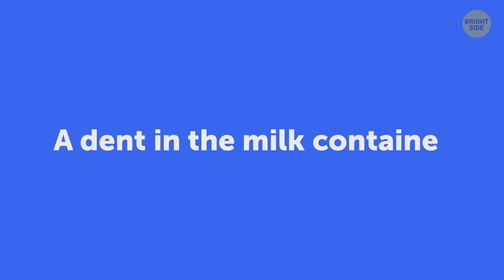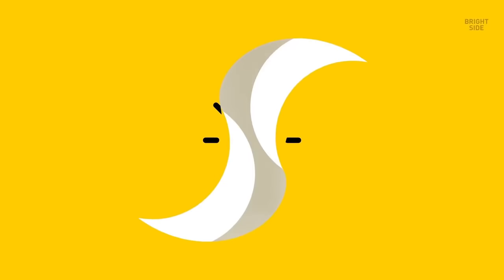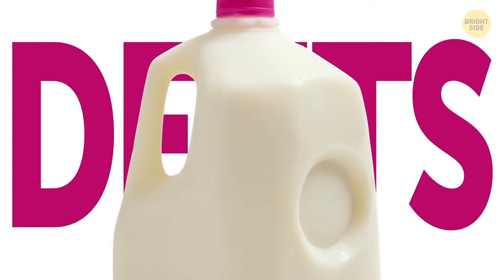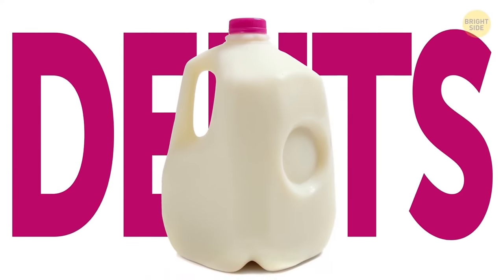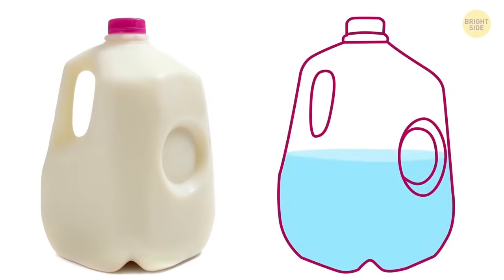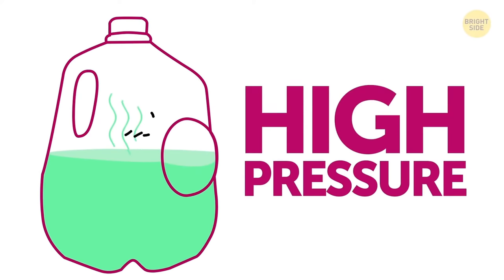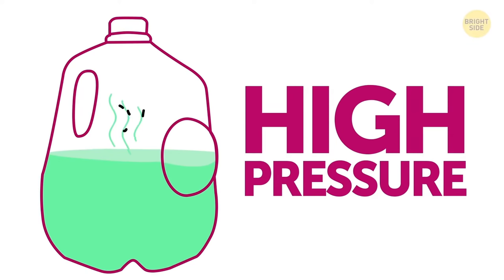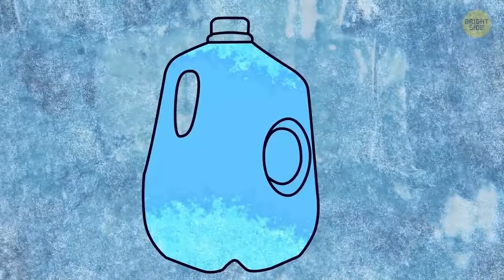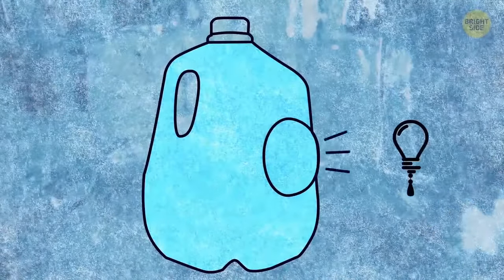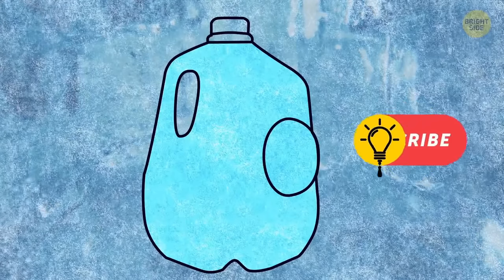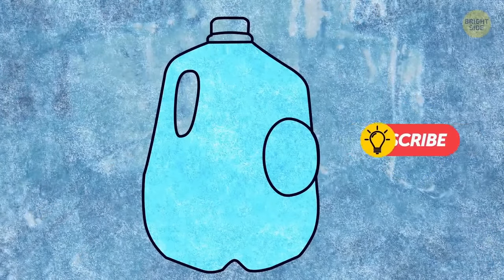Some plastic milk containers have dents in their sides that can serve several purposes. For one, if milk spoils, this process can cause swelling and high-pressure buildup inside the container. That's when the dent comes in handy. It pops out and doesn't let the jug blow up. Plus, if you decide to freeze the milk, it'll expand like any other liquid, and then the indentation will pop out and prevent the container from bursting inside the freezer.